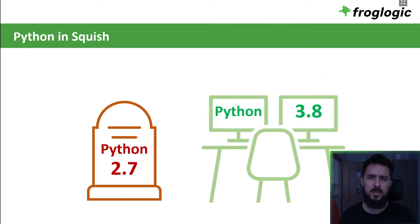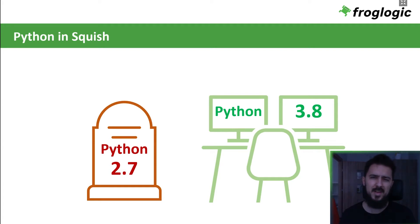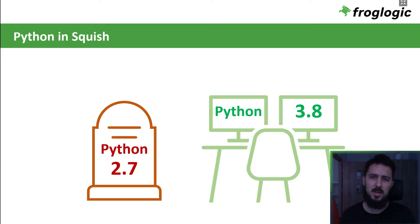Squish comes with two built-in Python interpreters. It's your choice if you want to use Python 2.7 or Python 3.8. Although we are allowed to use the former one, Python 2.7 is no longer maintained. Moreover, we can expect more and more third-party modules dropping support for this version. If possible, I recommend switching to Python 3.8, unless we are already there.